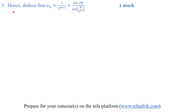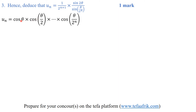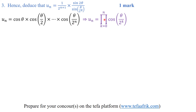Hence, deduce that UN equals this expression. Now we have UN as the product of cosine of theta right up to cosine of theta on 2 to the n. We can write it using product notation: the product of cosine of theta on 2 raised to the power k, where k goes from 0 to n — because when k is 0 we get the first term cosine of theta, when k is 1 we get the second term, and so on up to k equals n.